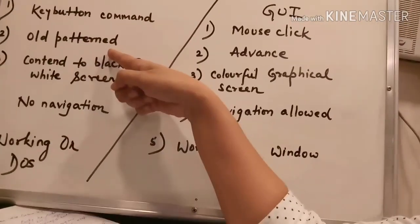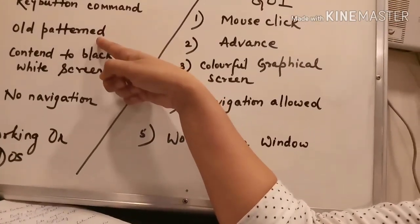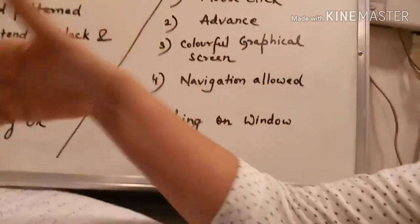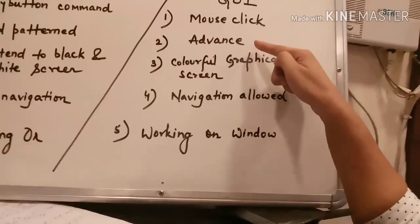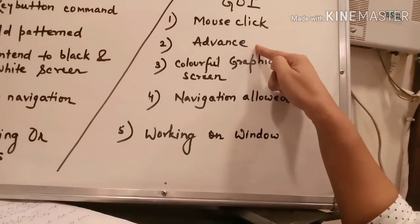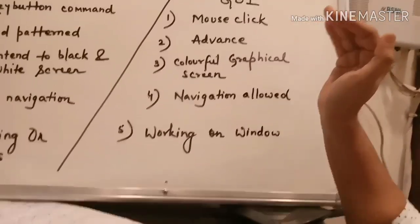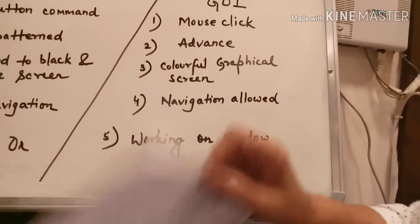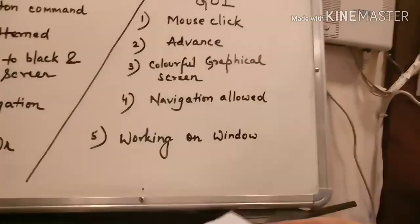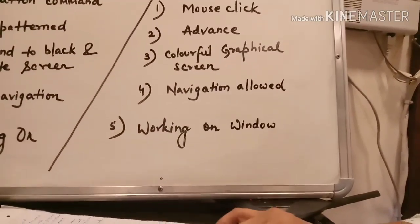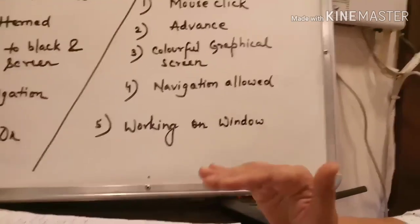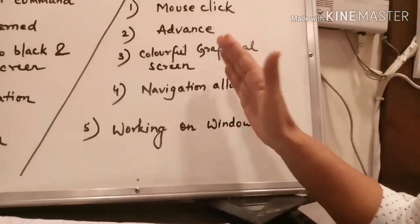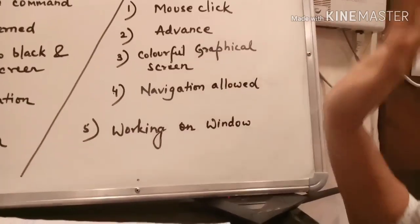CUI is a very old pattern and does not support any graphics or colors. GUI, however, is a very advanced version and is fully graphical. In GUI you can use charts, graphs, templates, word art, clip art, text, pictures, backgrounds, and much more. CUI is only a black and white screen — quite boring to use — whereas GUI is a colorful graphical screen with support for 65,000 colors.